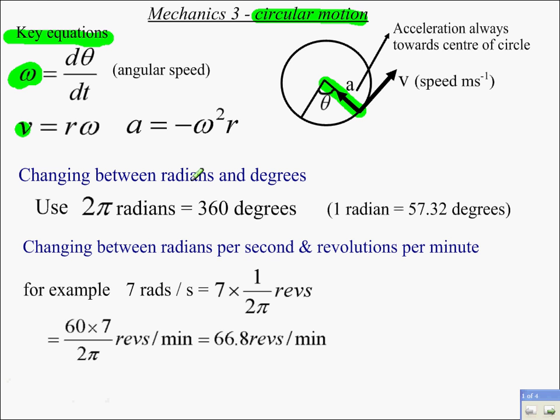Now, just the basics. Changing between radians and degrees, there are 2π radians in a circle. So, 2π radians equals 360 degrees. Changing between radians per second and revs per minute, for example, 7 radians per second would be 7 times 1 over 2π revolutions. Because 2π radians is 360 degrees, or 1 revolution. And so, revs per minute would be 60 times how many revs per second.